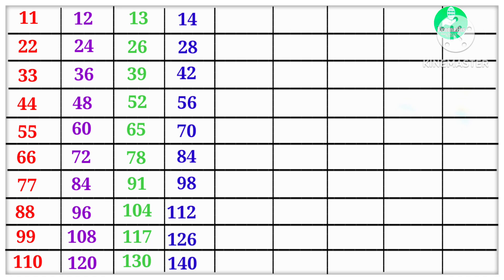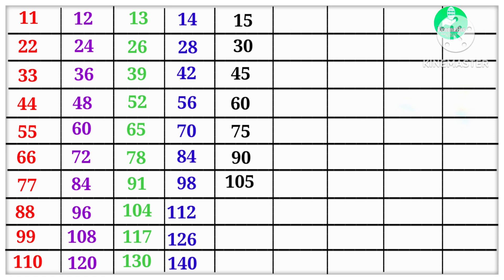14 10s are 140. 15 1s are 15, 15 2s are 30, 15 3s are 45, 15 4s are 60, 15 5s are 75, 15 6s are 90, 15 7s are 105, 15 8s are 120, 15 9s are 135, 15 10s are 150.